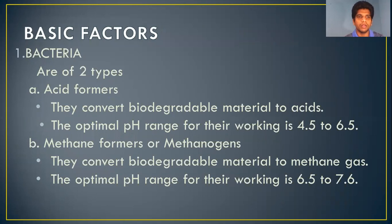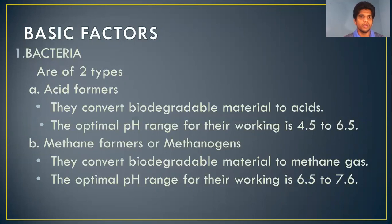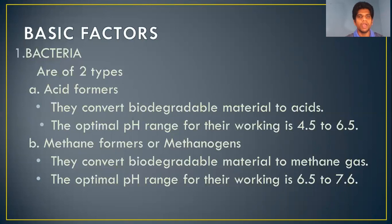First basic factor is bacteria. The organic materials are broken down by bacteria. There are two types of bacteria: acid formers and methanogens. Acid formers convert biodegradable materials to acids, and their optimum pH range for working is 4.5 to 6.5. Methanogens convert biodegradable materials to methane gas, and their optimal pH range for working is 6.5 to 7.6.